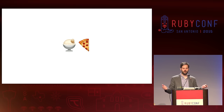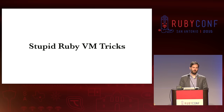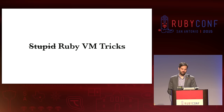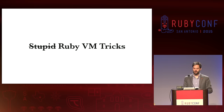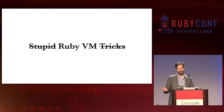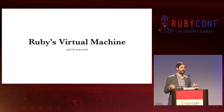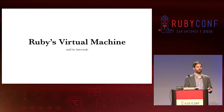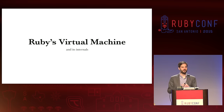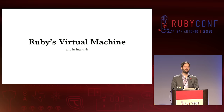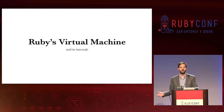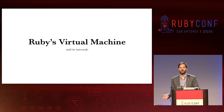I was going to name this talk 'Stupid Ruby VM Tricks,' but then I realized the tricks aren't very stupid — and they're also not tricks. So it's just Ruby VM. I'm going to talk about Ruby's virtual machine and its internals. I'm very, very nervous — I've never given this talk before. The upshot is that I'm right before lunch, so if I end too quickly everyone will be happy. Also, this is the very first day, so by the end of the conference everyone will have forgotten about my talk.